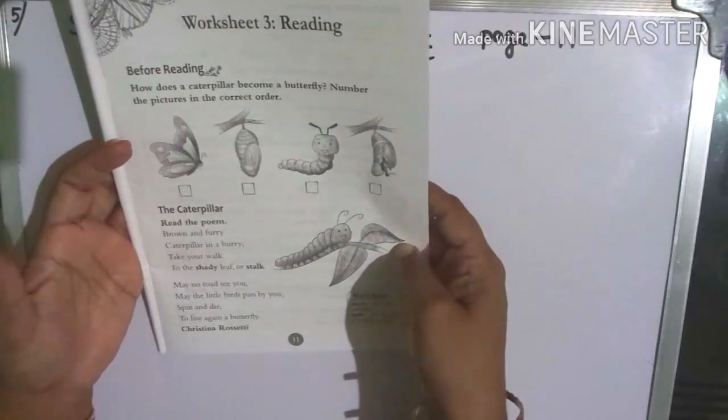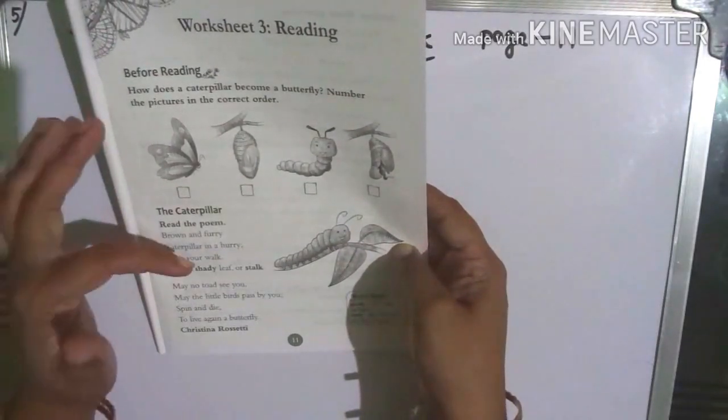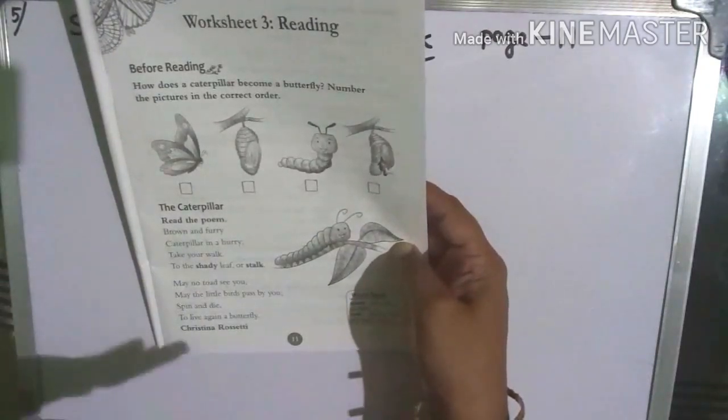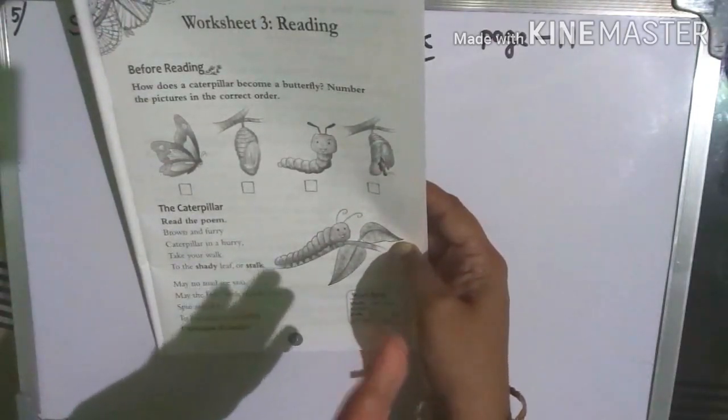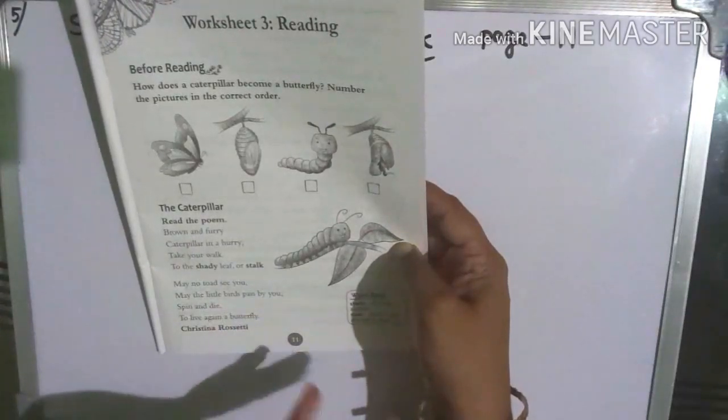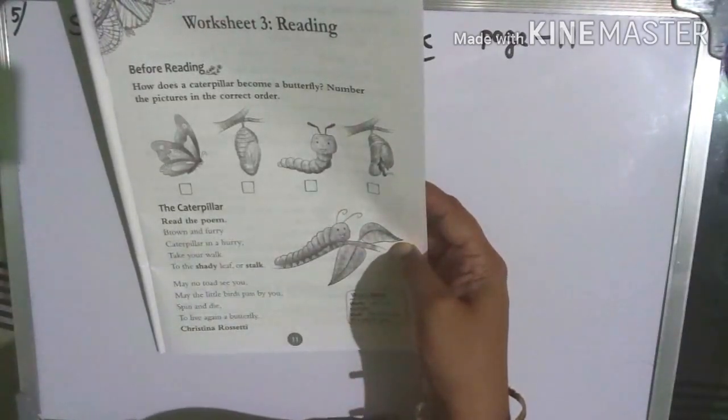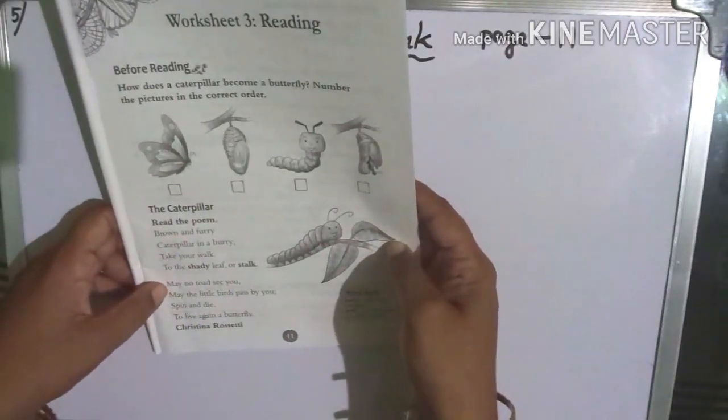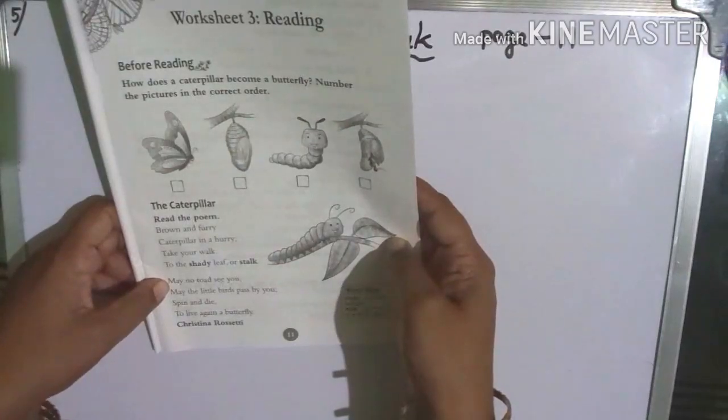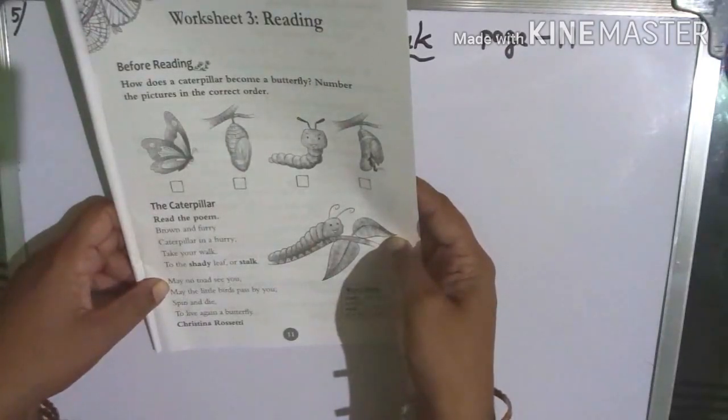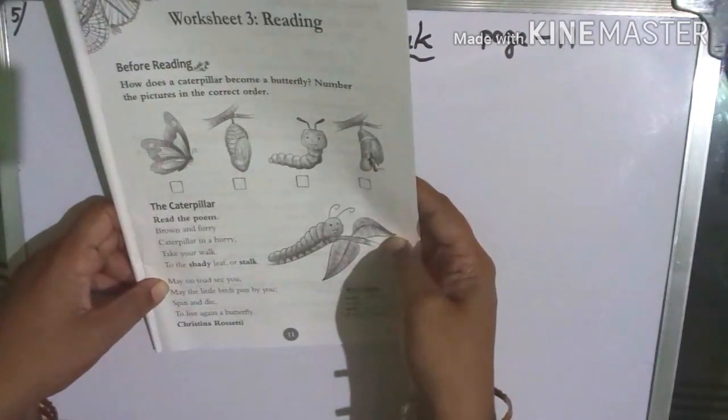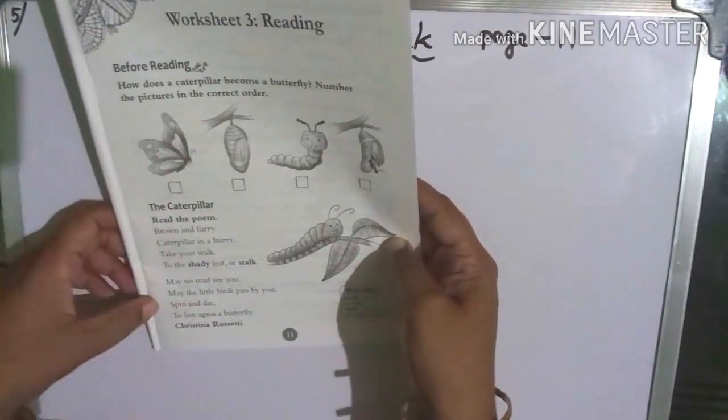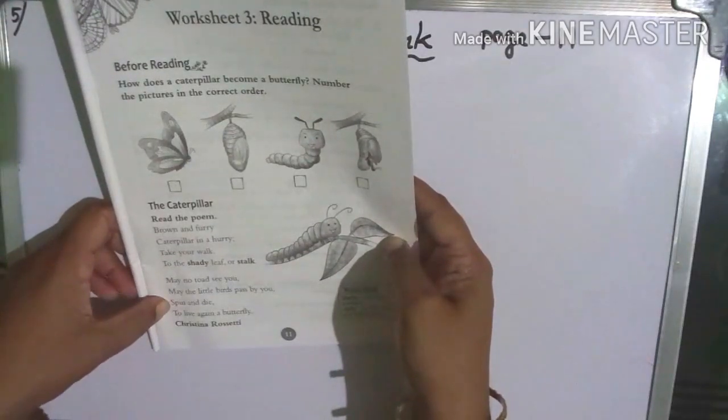May no toad see you - the toad won't see you. May the little birds pass by you - if the birds pass by, then the toad cannot see you. The little birds that pass by cannot see you either.